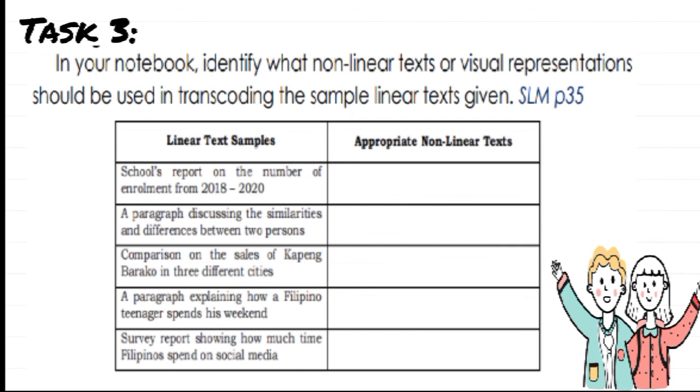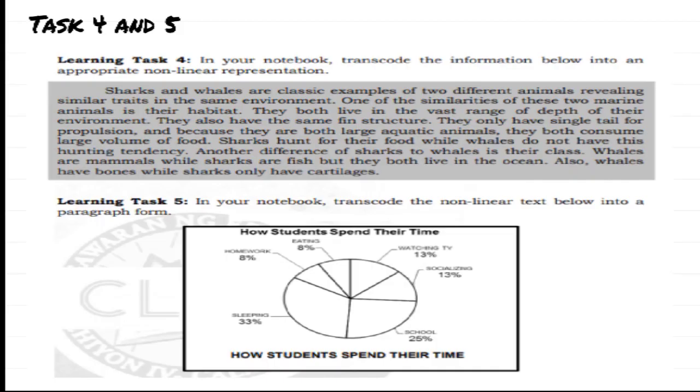And then for this next activity, for task four, transcode the information below into an appropriate non-linear representation. For task five, transcode the non-linear text below into a paragraph form. So that would be your assignment.